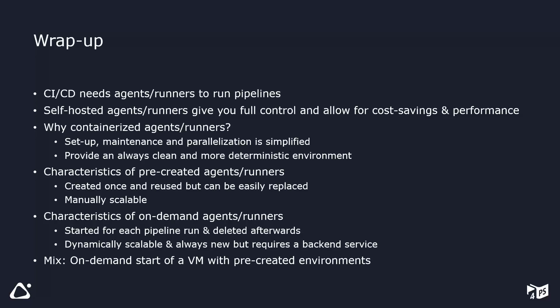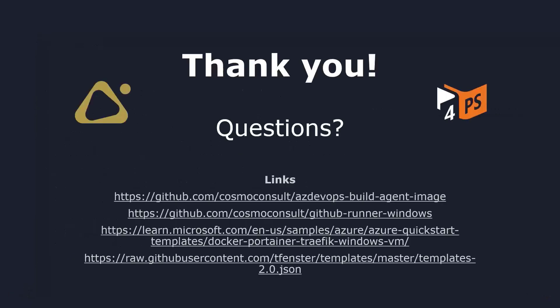We've also prepared some links: the first two are the container images for the Azure DevOps build agent and the GitHub runner. The third is the Azure Quickstart template Tobias showed for creating a Windows VM with Docker, Portainer, and Traefik installed. The fourth is the Portainer templates repository to quickly create a GitHub runner via the graphical interface of Portainer. Thank you a lot for listening — we're happy to answer any questions.